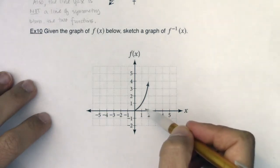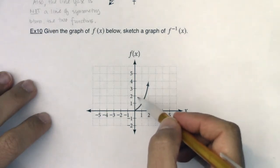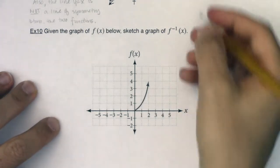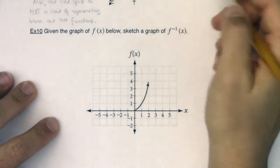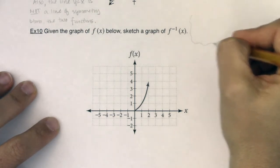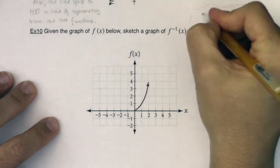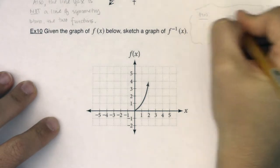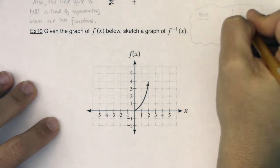I want to point out a few things. This is a function that passes the vertical line test and the horizontal line test. For consistency, I want to talk about domains and ranges for f and for f inverse.